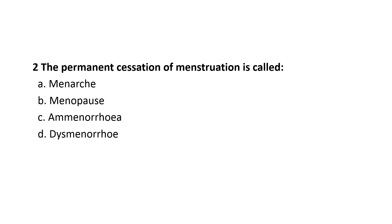Permanent cessation of menstruation is called menopause. Menarche is the start of menstruation. Amenorrhea is the absence of menstruation in reproductive age. Dysmenorrhea is painful menstruation.